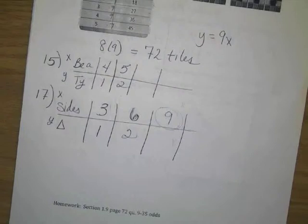Boundedness. What were the three types of bounded? Actually there were four types. There's unbounded, bounded above, bounded below, and bounded — that's where it's bounded above and bounded below.